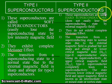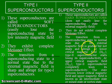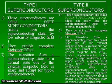Whereas in case of type 2 superconductors, the transition from a superconducting state to a normal state due to an external magnetic field is gradual but not sharp and abrupt. At the lower critical field,